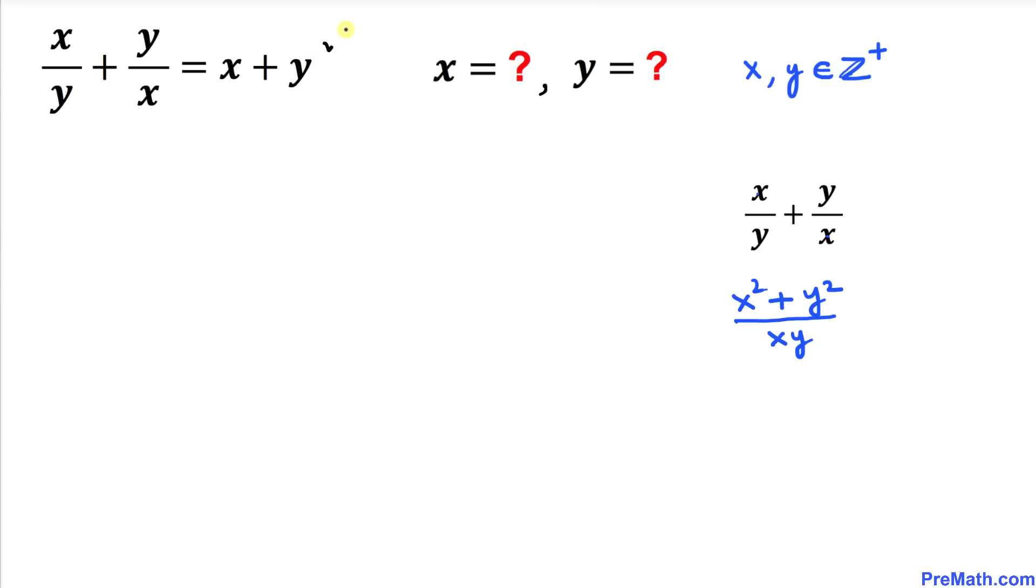So therefore, our equation becomes—the left-hand side I'm going to replace by this one. So the left-hand side is x squared plus y squared divided by xy, and equals the right-hand side, which is going to be the same. I'm going to leave it as it is.